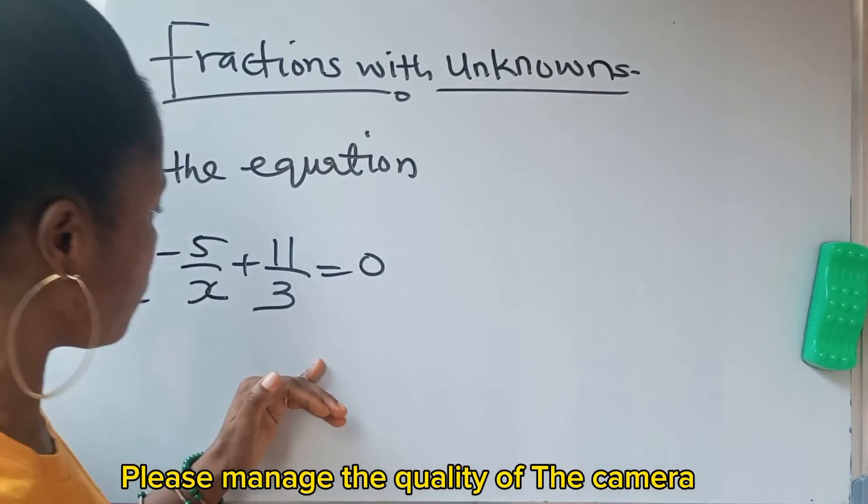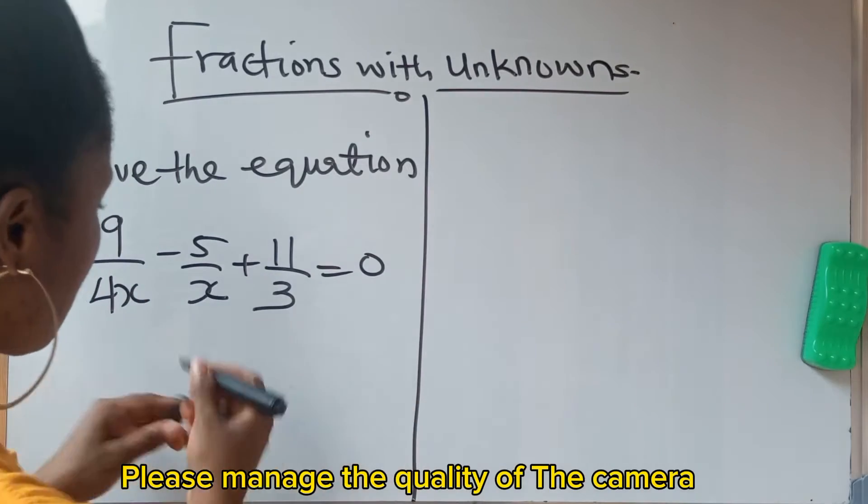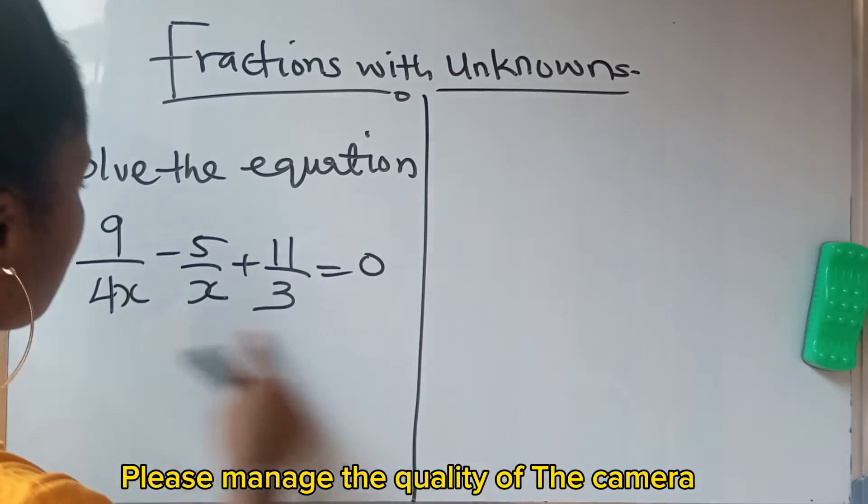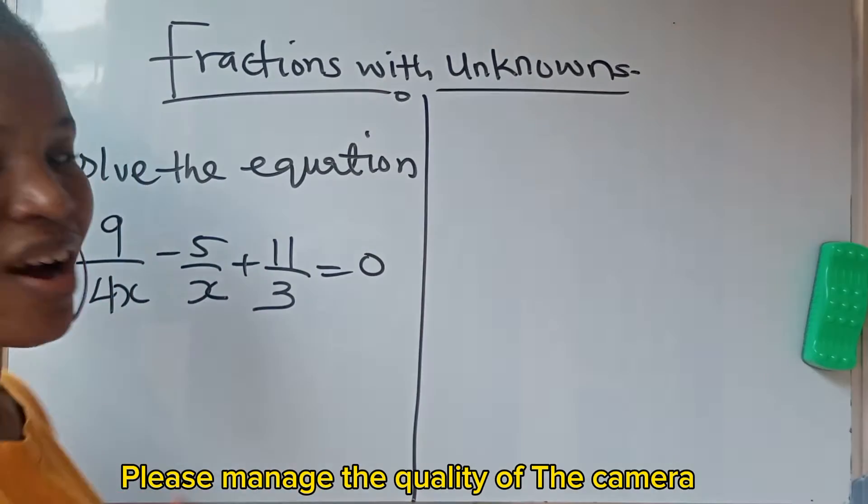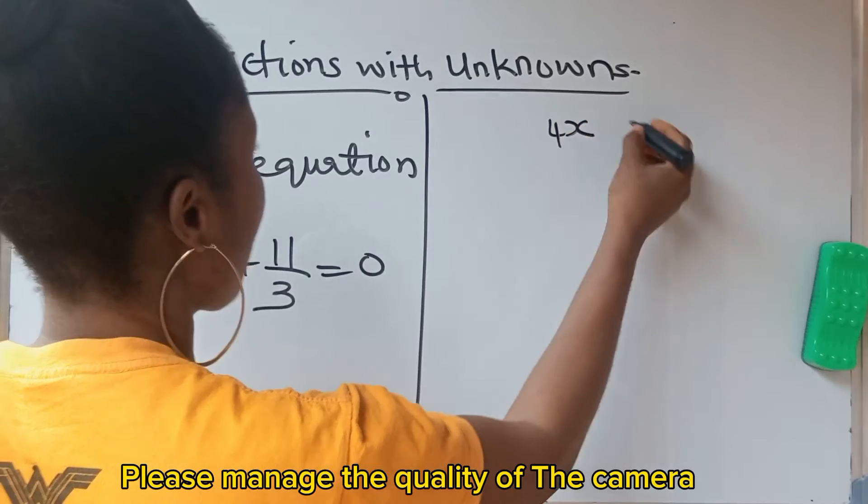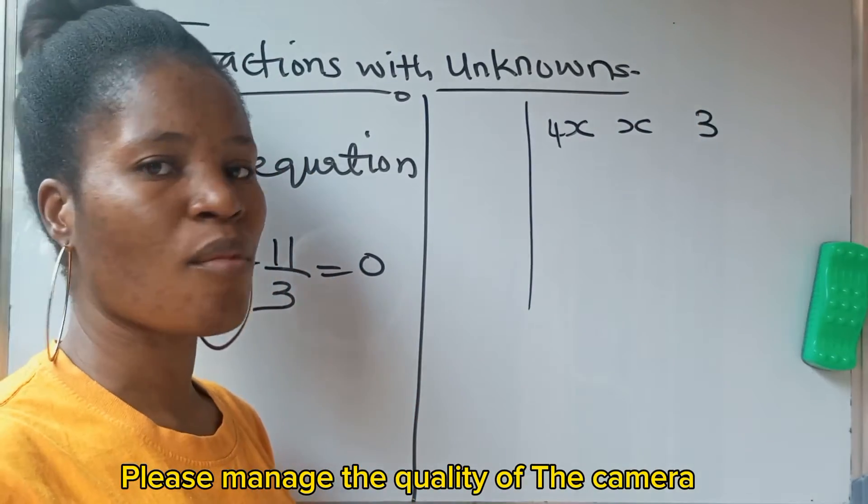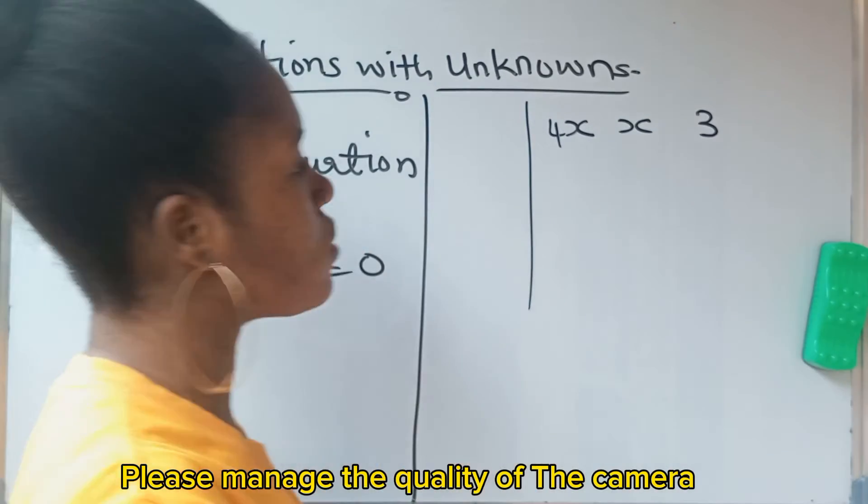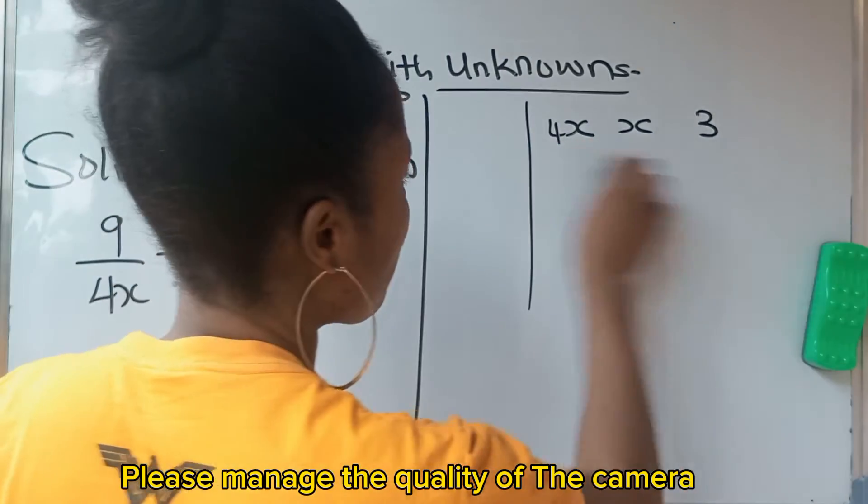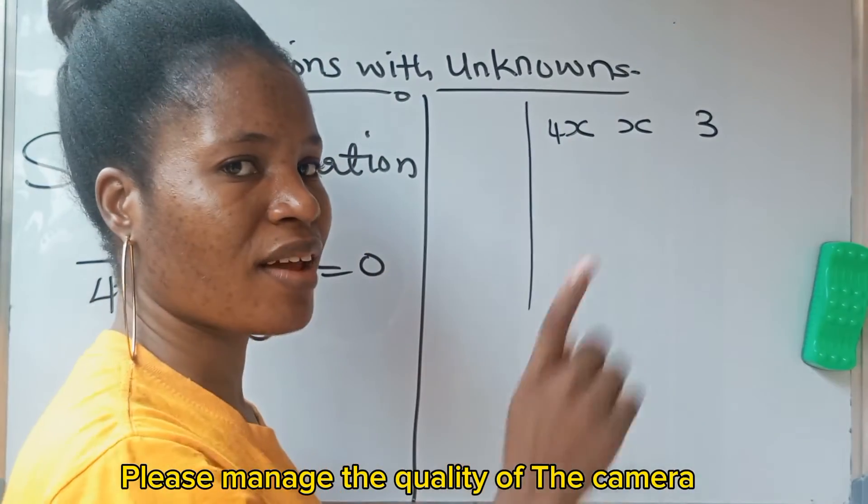When you look at this particular question, you are going to notice that at this point, what is the LCM of the denominator? That is the first thing you need to get. How do you get it? The denominators are 4x, x, and 3. Now, to get LCM of any number or any set of numbers, when you look at this number, what can divide any of them?